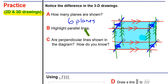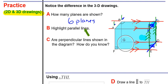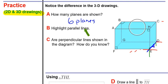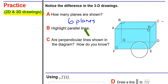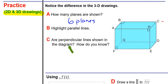I recommend not drawing the triple arrows on your paper since it gets too cluttered. Let me erase that and move on to the last question, which asks whether perpendicular lines are shown in the diagram and how do you know.